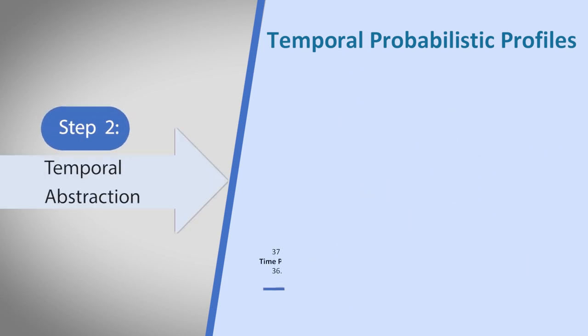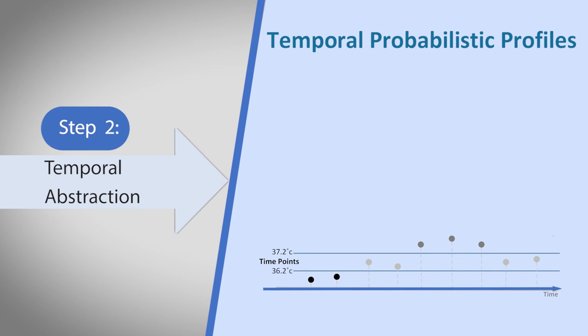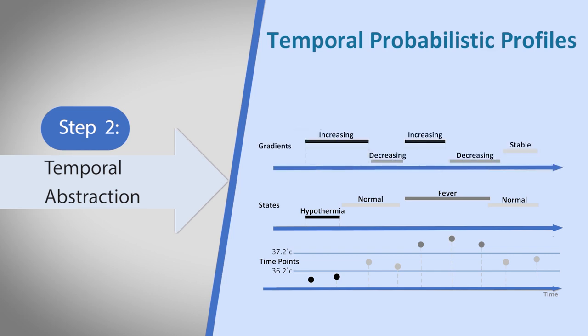State abstraction classifies values into abstract concepts, while gradient abstraction indicates direction of change. Lastly, our newly proposed trend abstraction detects global trends and smooths cases of frequent small changes.